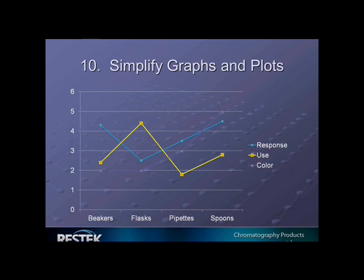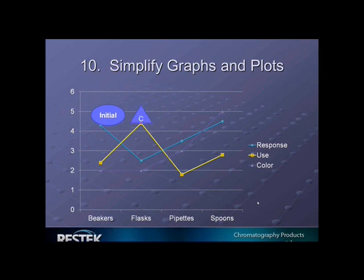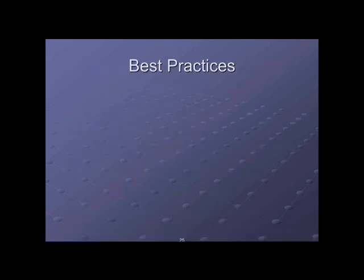Graphs are also a problem sometimes. Leonardo da Vinci in the 15th century said, 'Simplicity is the ultimate sophistication.' Sometimes our graphs are way too complicated. We might show the initial point, the midpoint, where we are today, where we want to be first, and then add a 'wow' element — that may be too complex. Try to simplify things as much as possible when graphing data.